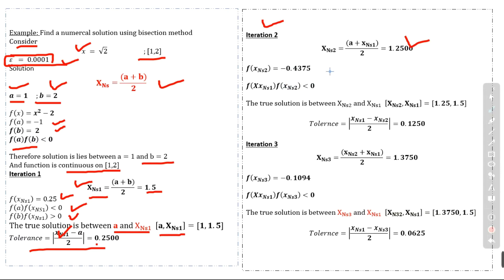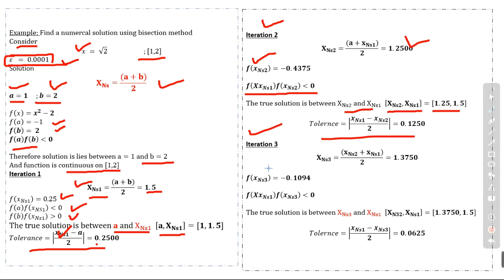Iteration two: we calculate the new estimated numerical solution, check the sign of the function at x2, and find f(x1) · f(x2) < 0, so the true solution is between x2 and x1. The new interval is [1.25, 1.5]. We check tolerance again. In iteration three, we compute x3 and repeat the same procedure. The tolerance between x1 and x3 is 0.0625, which is still greater than 0.001.